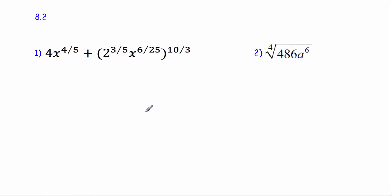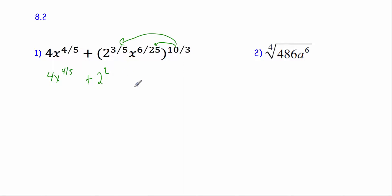For 8.2 we have exponent rules. We're adding, so we need like terms — it doesn't look like we have them, but we can use the power-to-a-power rule: multiply the exponents. Over here we have 4x to the four-fifths. When I multiply three-fifths times ten-thirds I get two; when I multiply six over 25 to the ten-thirds I get four-fifths. Two squared is four, so now I have like terms and can add them: 8x to the four-fifths.